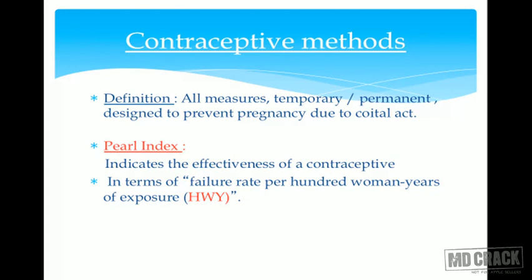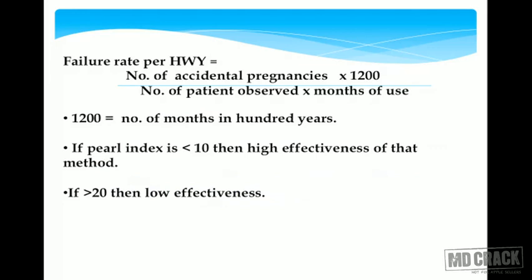The effectiveness of a contraceptive method is measured by the Pearl Index, which is always expressed in terms of per hundred woman-years. The formula calculates the failure rate as: total accidental pregnancies multiplied by 1200 — where 1200 represents 12 months times 100 couples — divided by the number of patients observed multiplied by months of use. For full-term pregnancy, 10 months are counted; for abortion, 4 months.